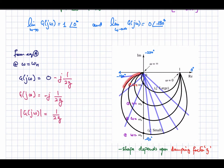As frequency keeps increasing, the phase increases and finally becomes minus 180 degrees as the frequency approaches infinity, where the magnitude approaches zero. There are two poles: each introduces minus 90 degrees, so combined they introduce a total phase of minus 180 degrees.